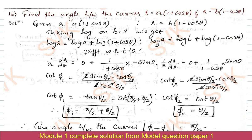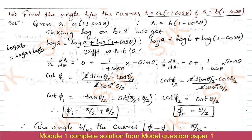Moving on to question 1b: find the angle between the curves r = a(1 + cosθ) and r = b(1 − cosθ). Consider the given two curves, then take log on both sides and apply laws of logarithm on the right-hand side. We use log(ab) = log a + log b. For both curves we have taken log, applied laws of logarithm, and then differentiate with respect to θ on both sides.